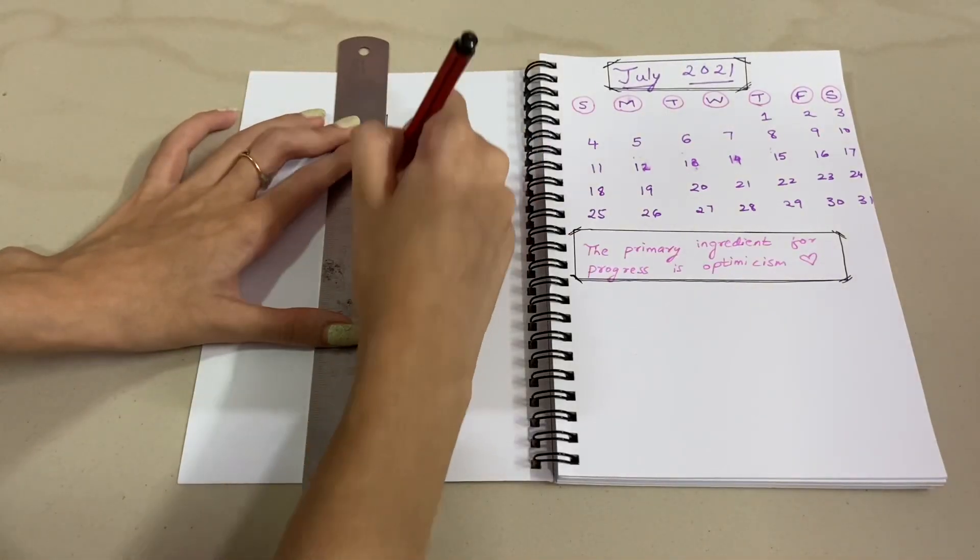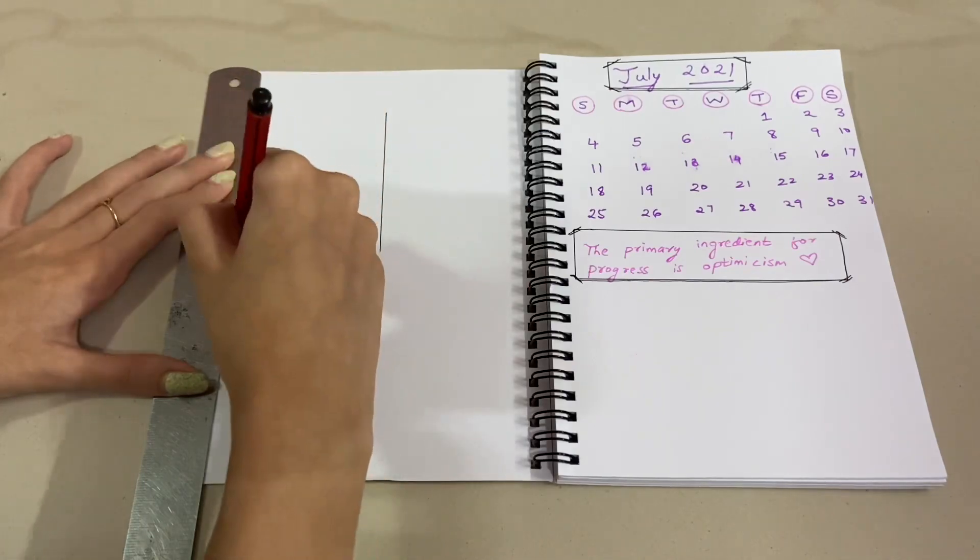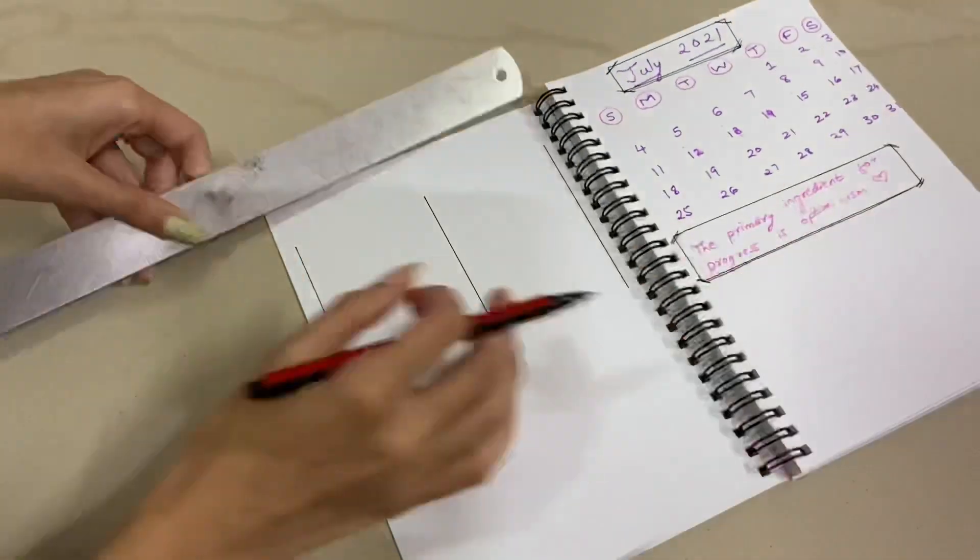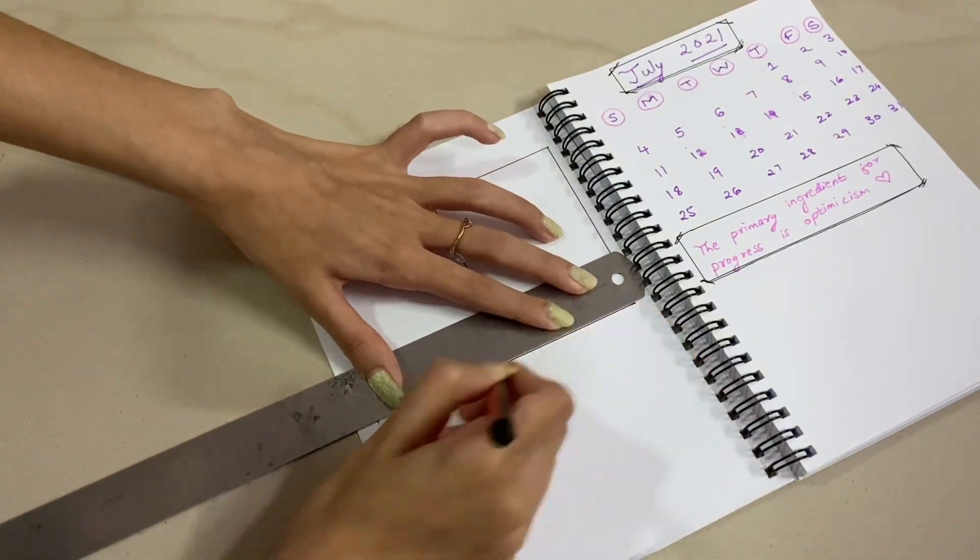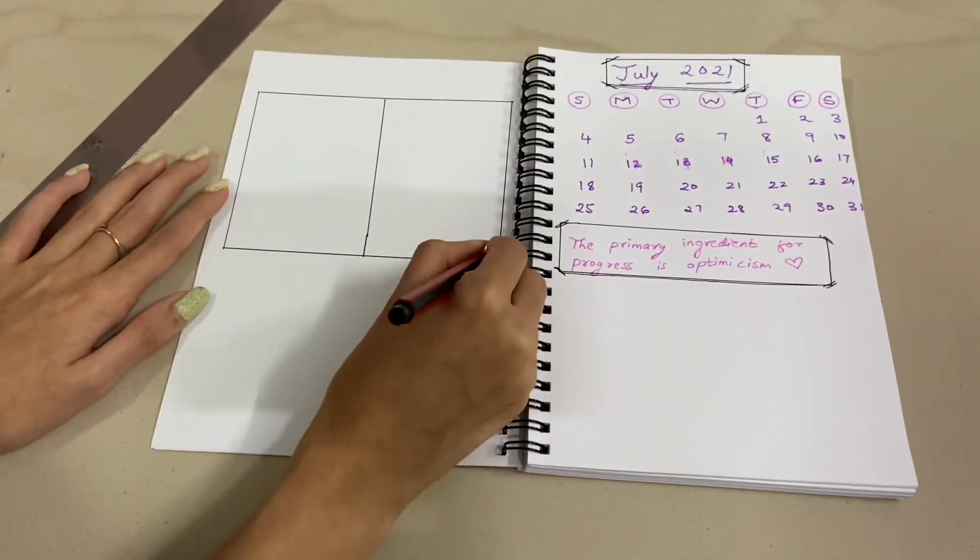On the left side, I will be making two boxes to write goals for this particular month. So one will be for personal goals and the other box will be for professional goals. So here I can write all the goals that I have for this particular month.